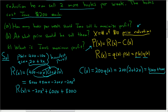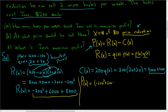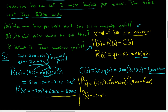Now we can find the profit function. Big P of X is the revenue minus the cost. The revenue is −20X² + 600X + 8,000, minus the cost function 4,000 + 400X. Simplifying: −20X², then 600X − 400X = +200X, then 8,000 − 4,000 = 4,000. So the profit function is P(X) = −20X² + 200X + 4,000. Now we finally have the profit function.